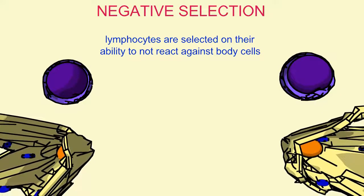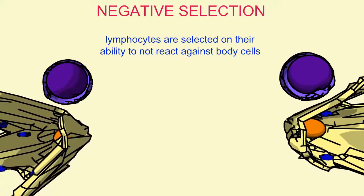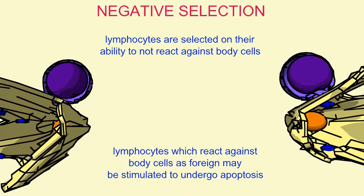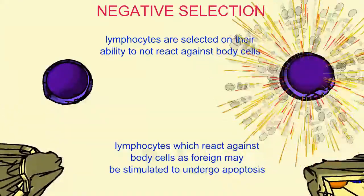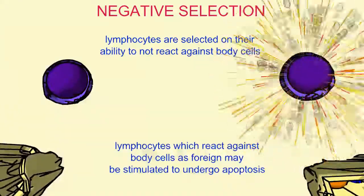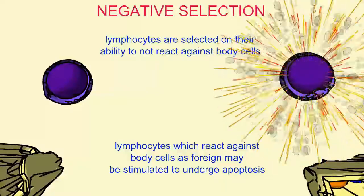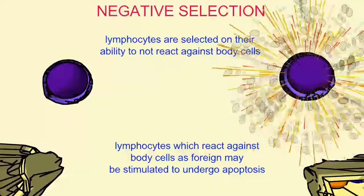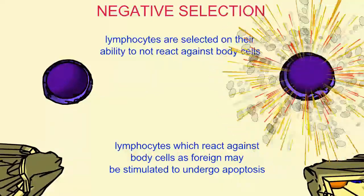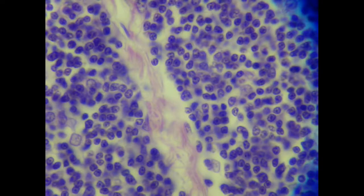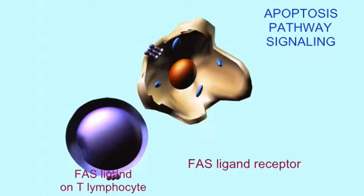T lymphocytes also undergo negative selection, in that any T lymphocyte which will react with self — which would recognize self as foreign and attempt to destroy it — would then be triggered to undergo programmed cell death, or apoptosis, using the multiple genetic mechanisms for apoptosis and by releasing toxic molecules from mitochondria.